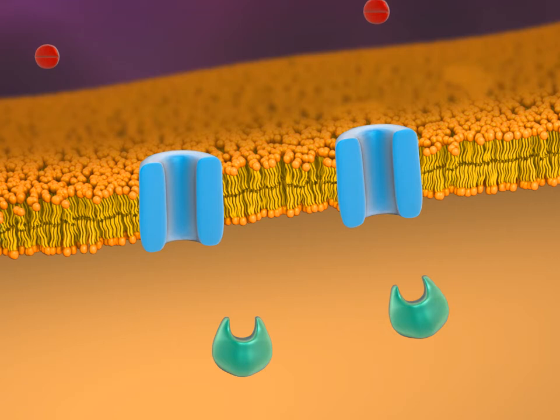To affect bacteria, an antimicrobial drug must physically bind to some part of the prokaryotic cell. This part of the cell is known as the drug's target.